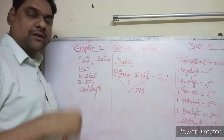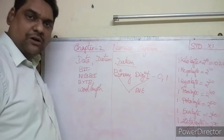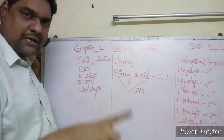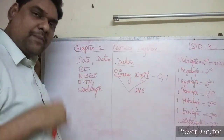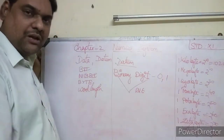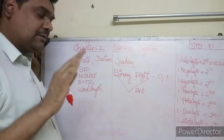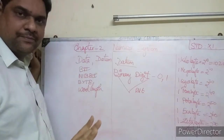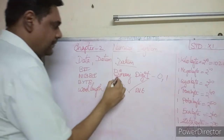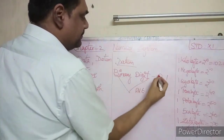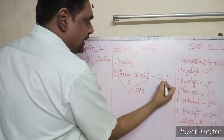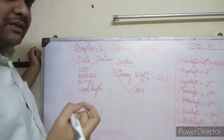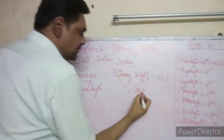Because the computer can only understand binary — nothing else — whatever we type must be converted and stored in binary form. A single memory location that can store either zero or one is called one bit.